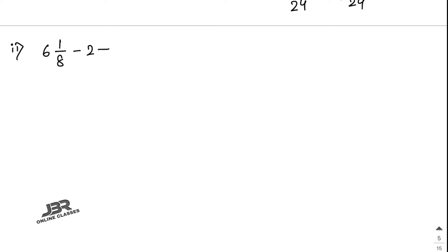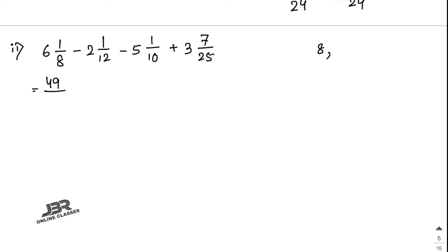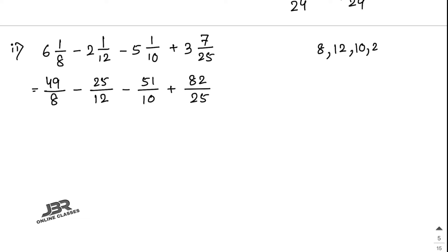Sum 2.2: 6 and 1/8 minus 2 and 1/12 minus 5 and 1/10 plus 3 and 7/25. Convert to improper fractions: 49/8, 25/12, 51/10, and 82/25. Now find the LCM of 8, 12, 10, and 25.